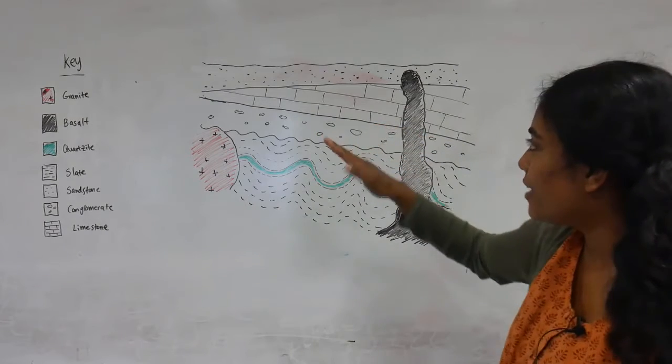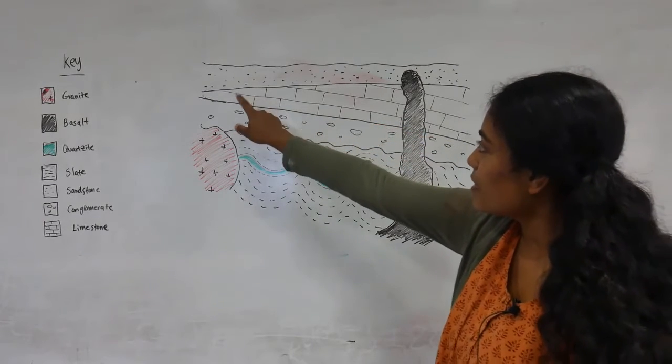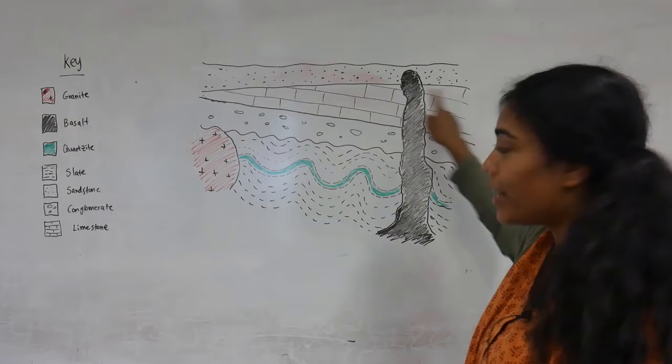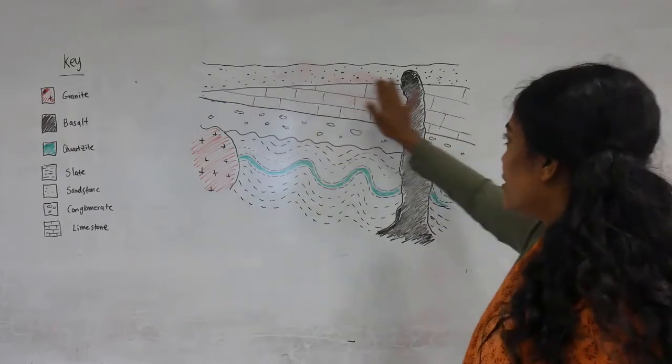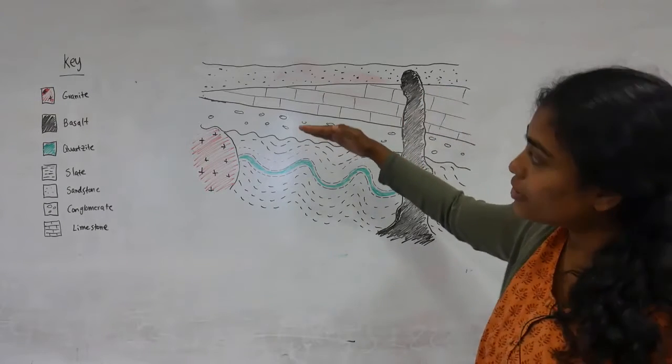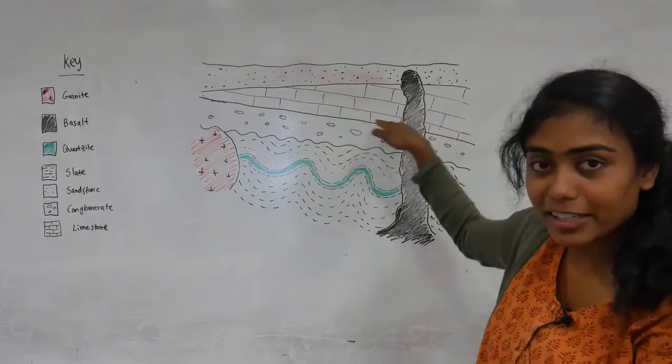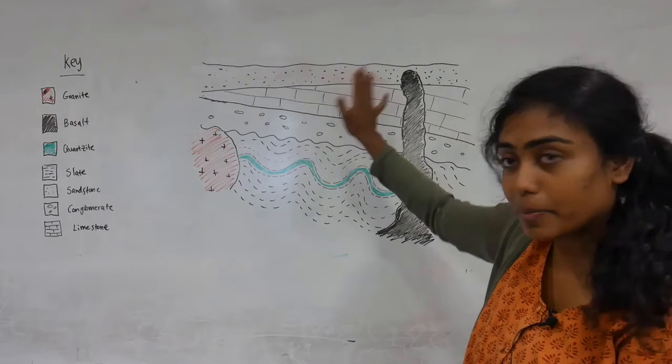Then it would have been eroded away to create another unconformity. So we have this surface where the tilt of the beds underneath it is different from above.